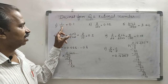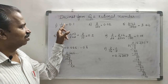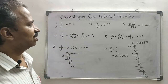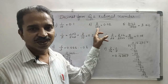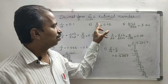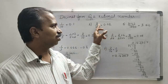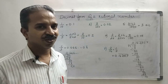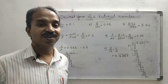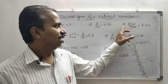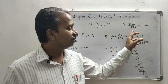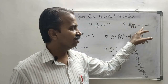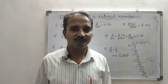1 upon 10 has one zero in the denominator, so the decimal point is shifted to the left by 1 digit, giving 0.1. In the second one, denominator is 100 with two zeros, so the decimal point is shifted left 2 digits, giving 0.02. In the third one, 3142 upon 1000 — denominator has three zeros — so the decimal point is shifted left 3 digits, giving 3.142.